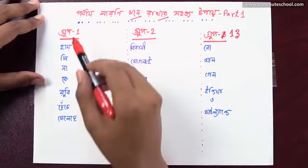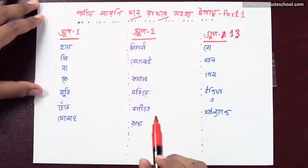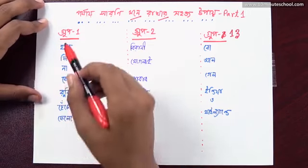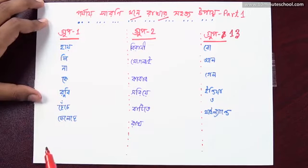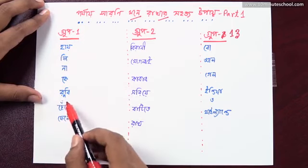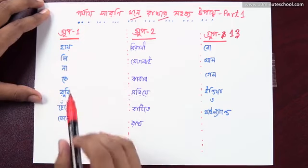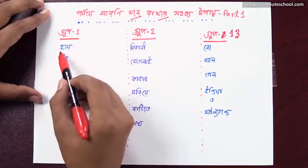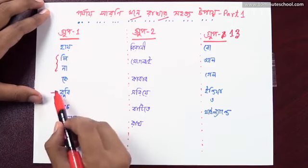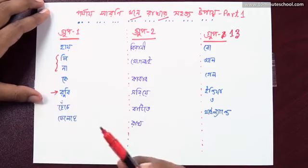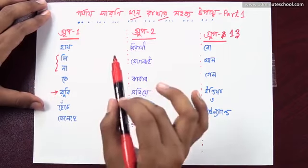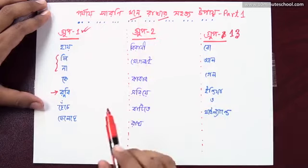First, Group 1. Group 1 has been given the first one. If we have a Group 1, we will have a Group 1.